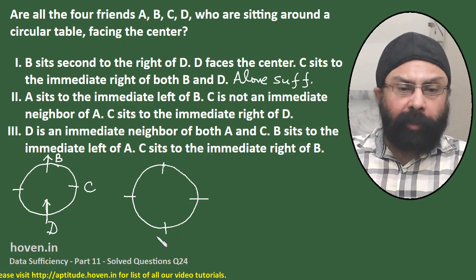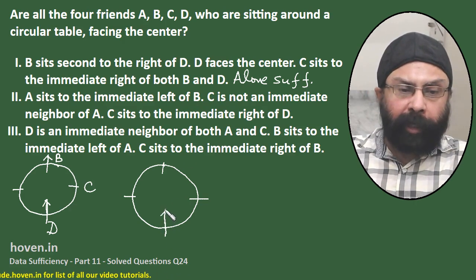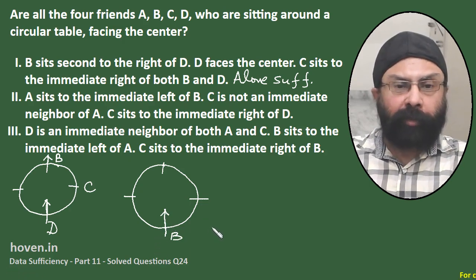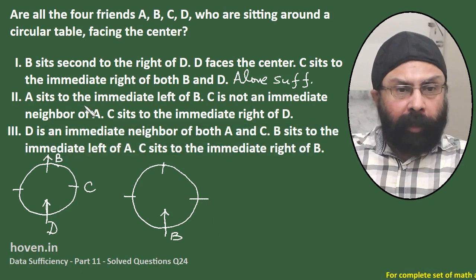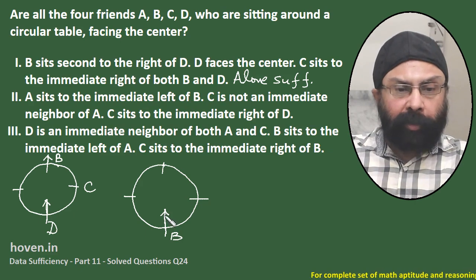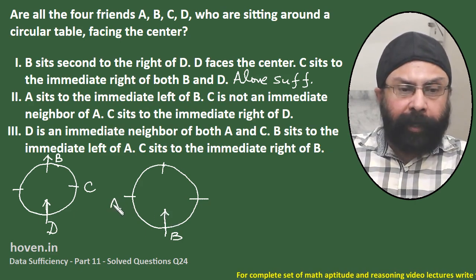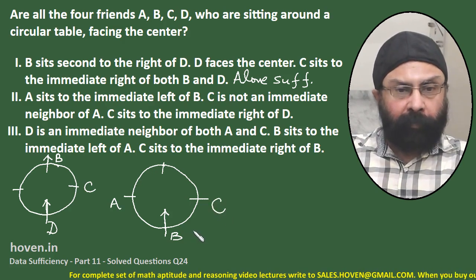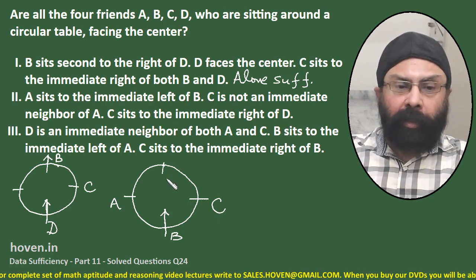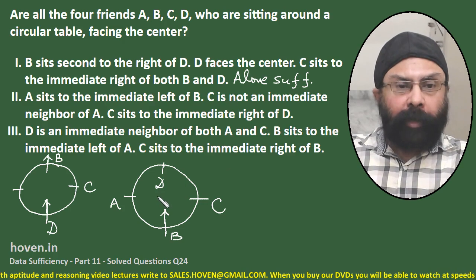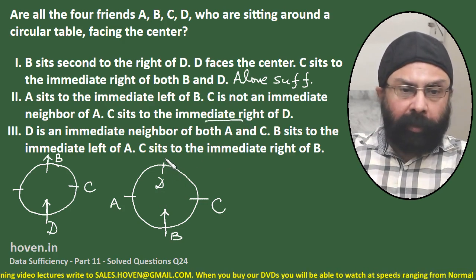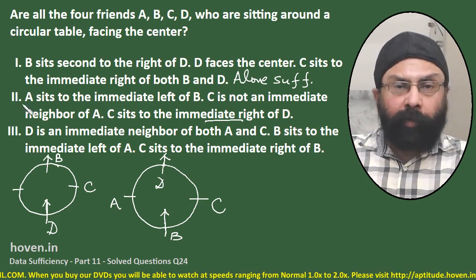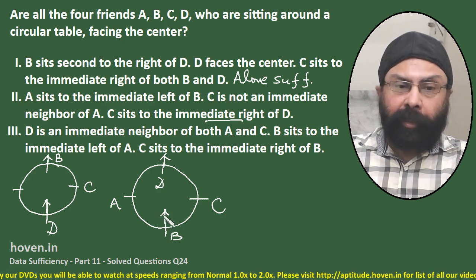Nothing in the statement directly tells us whether anyone is facing inside or outside. So we consider two sub-cases. First, assume B is facing inside — then A comes to the immediate left of B at that position. Since C is not an immediate neighbor of A, C must come at the opposite position. Then C sits to the immediate right of D, so D must be facing outside.